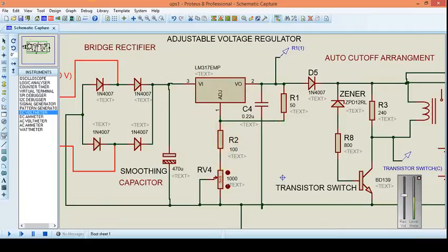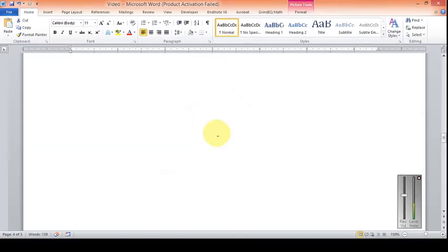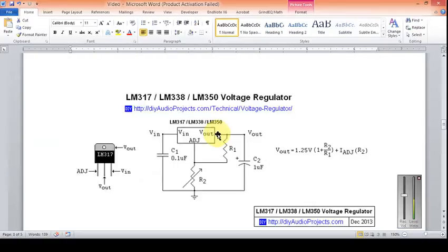Let me quickly show you how to do that. As you can see, for a typical LM317 series, the output voltage is 1.25 times 1 plus R2 by R1. This is R2 and this is R1. For the sake of simplicity, you can easily discard this portion.